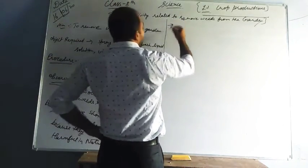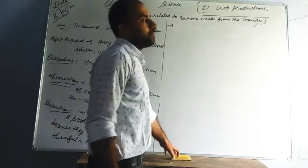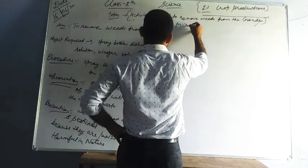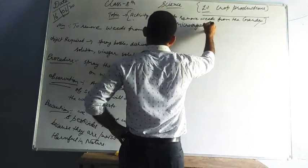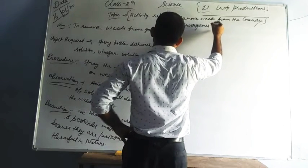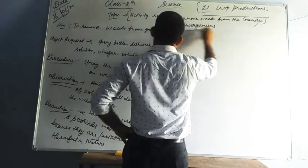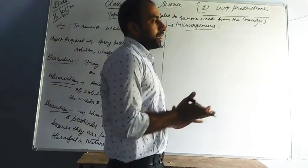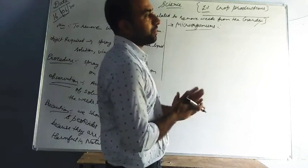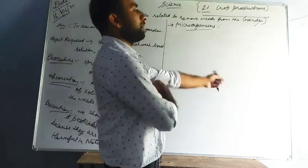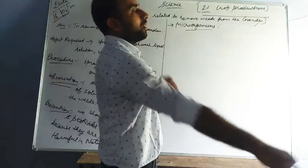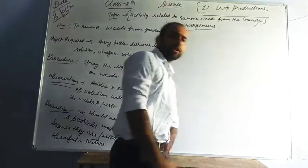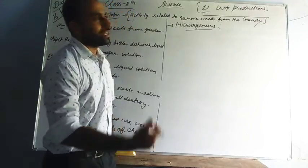Yesterday I did not tell you about microorganisms and why pesticides are required. There are certain microorganisms found in plants — different types of microorganisms — such as viruses and others that are just destroying crops.